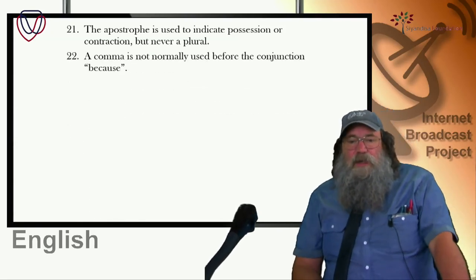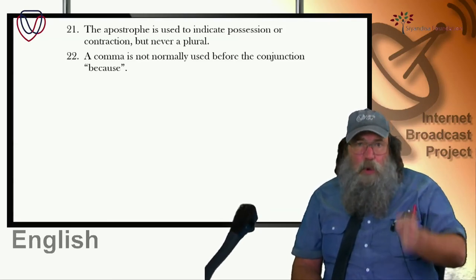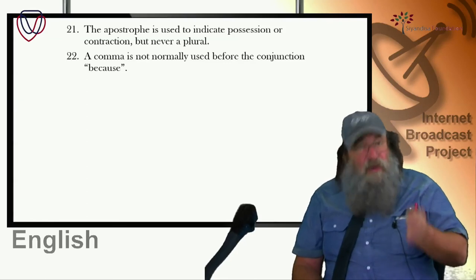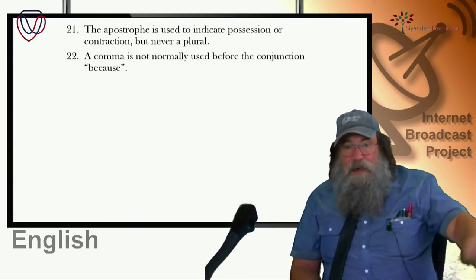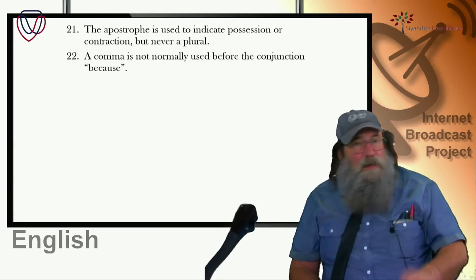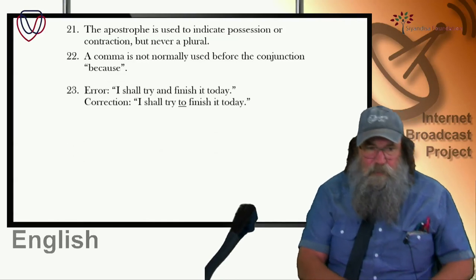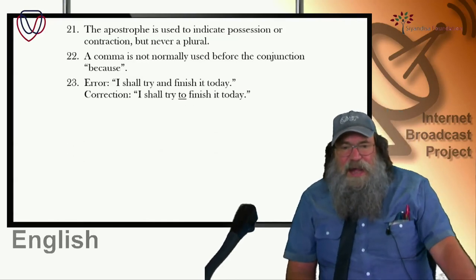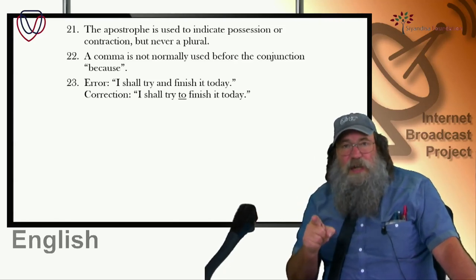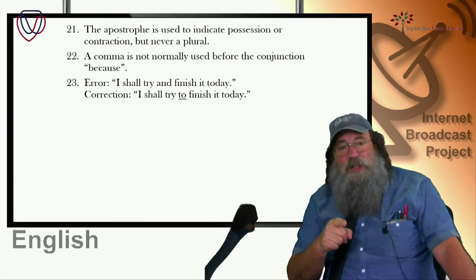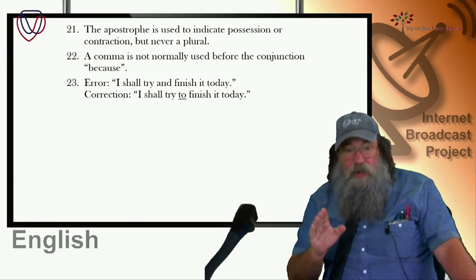A comma is not normally used before the conjunction 'because'. A comma indicates a pause, and we do not normally pause before saying 'because'. 'I shall try and finish it today' — error. The correction is: 'I shall try to finish it today.' The conjunction 'and' is wrong there — 'to' is correct as a preposition. 'We will be there soon' — here's an auxiliary verb error. It should be 'we shall be there soon'. In the first person, the future auxiliary verb is 'shall', not 'will'.